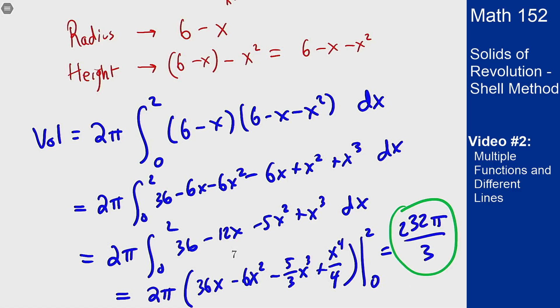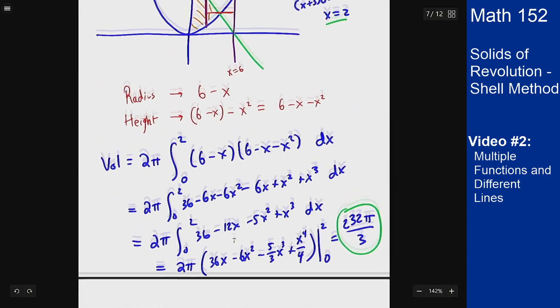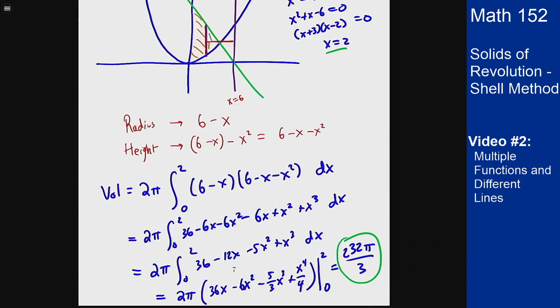So that's the idea of using the shell method to find these volumes. Even if you have different axis of revolution, different functions that are involved, you can all put it together to use the shell method to figure this out. The main thing that it really comes down to is can you figure out what the radius of the cylinder will be and what the height of the cylinder will be as a function of the variable you care about, and then work out the integral just like before. As long as you can set up the cylinders appropriately and find the radius and the height, the shell method works just as well as anything else to figure out what these volumes of revolution are.